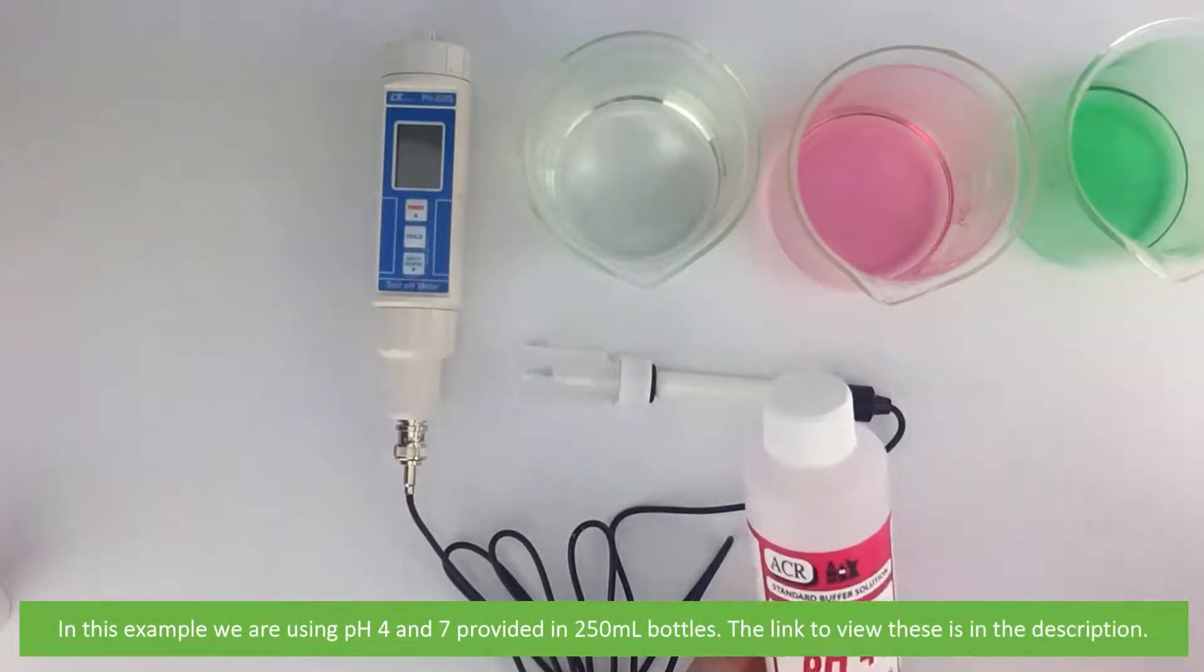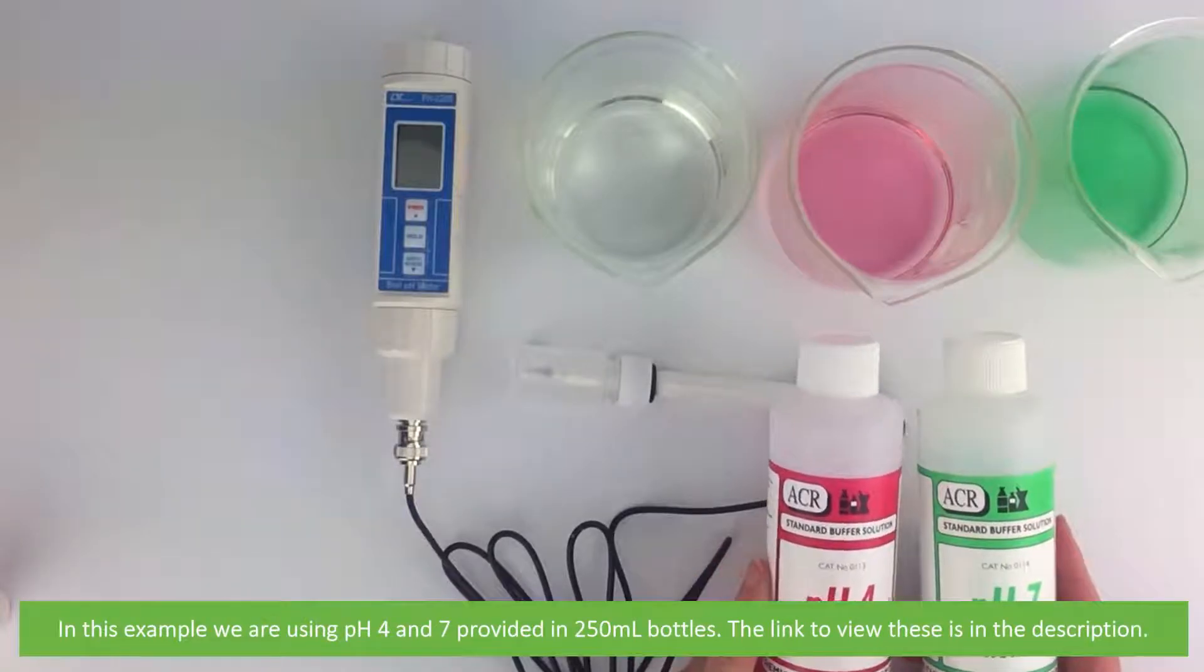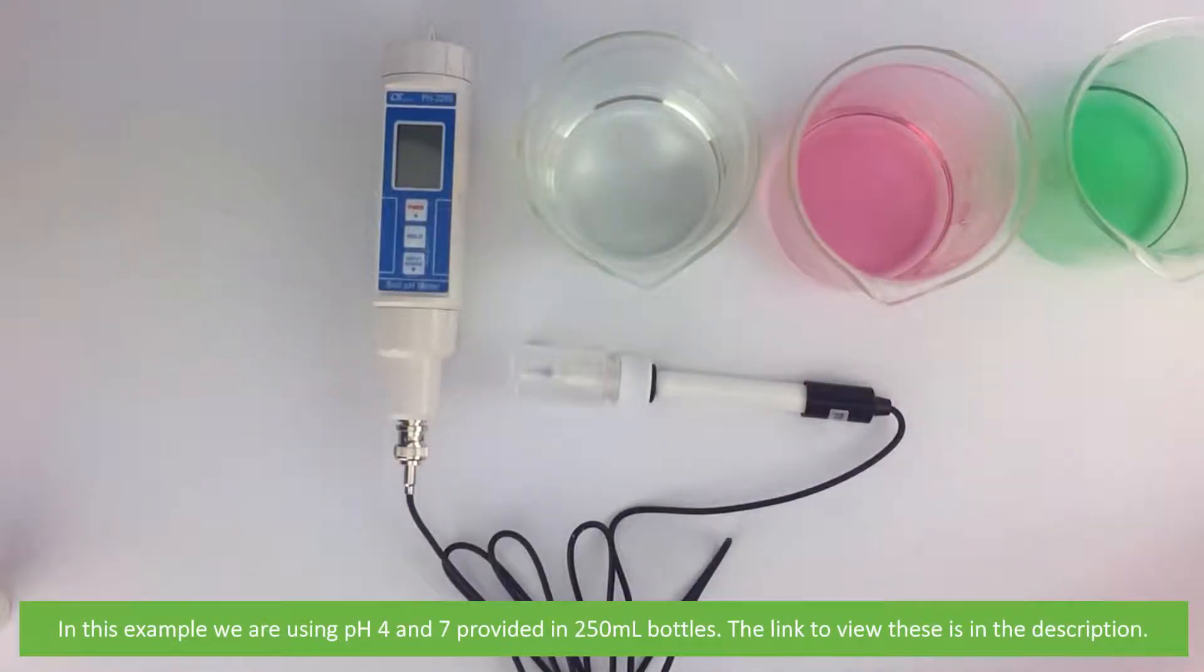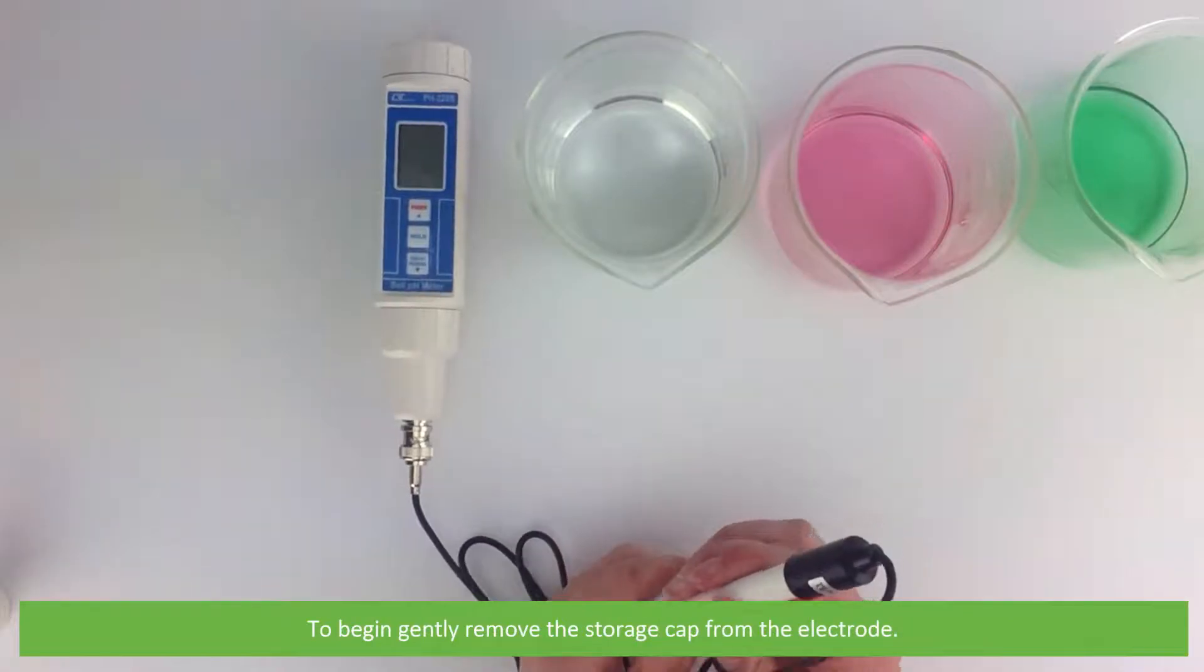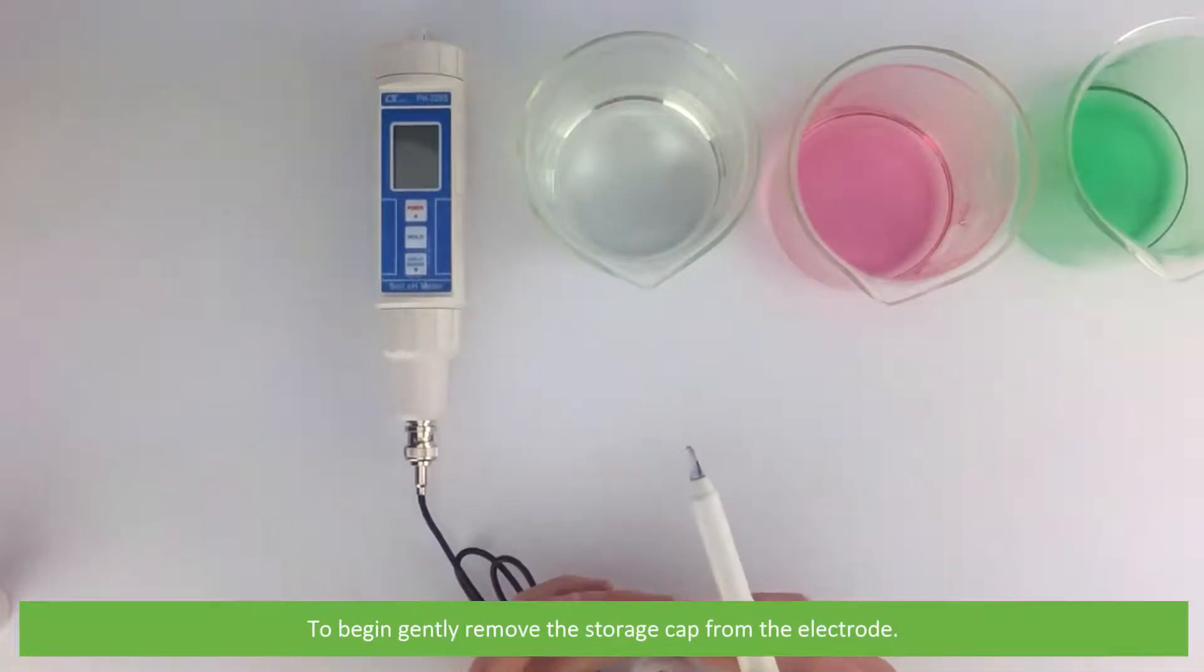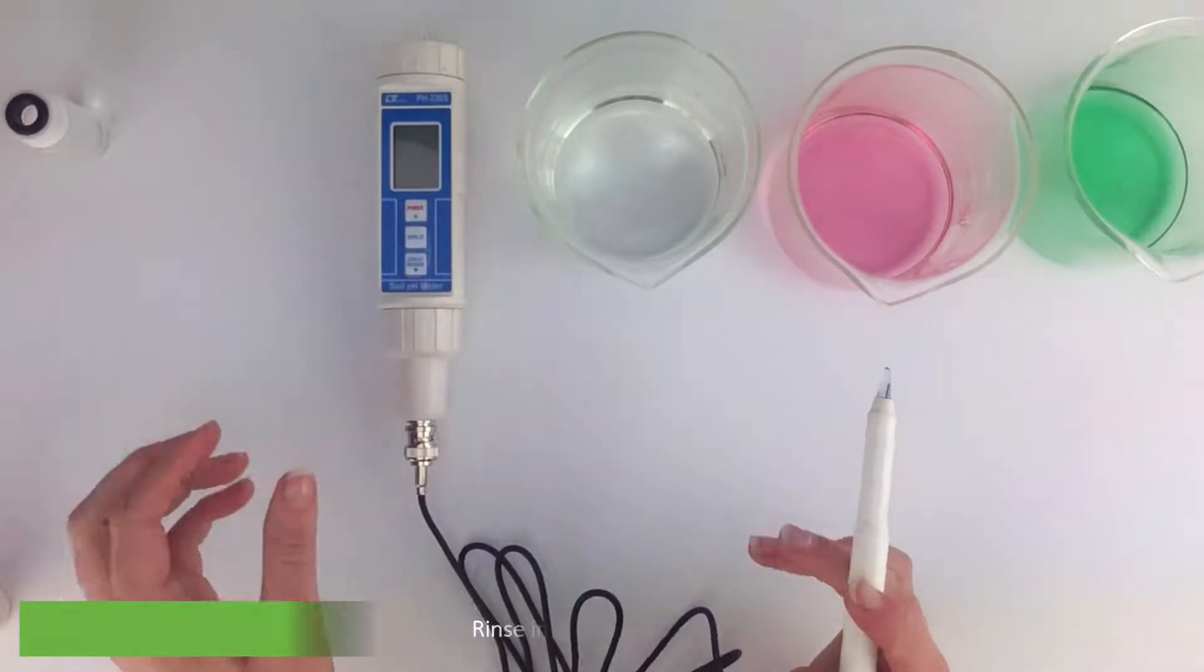In this example we are using pH 4 and pH 7 provided in 250 ml bottles. The link to view these products is in the description. To begin, gently remove the storage cap from the electrode and rinse the electrode in distilled water.